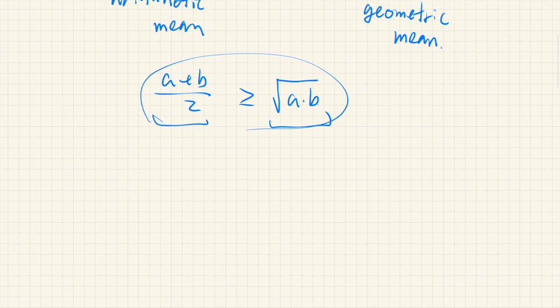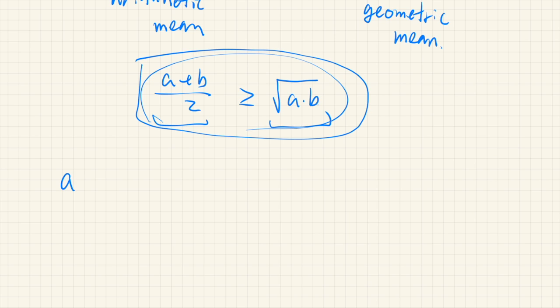Just in case you have never seen the proof of this two-number version, let's do that as an exercise. What we need to show is that a + b minus 2 times the square root of ab is greater than or equal to 0.